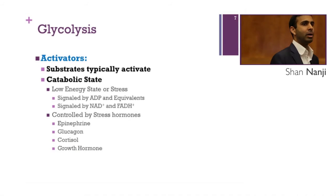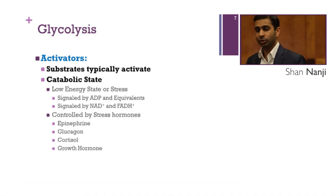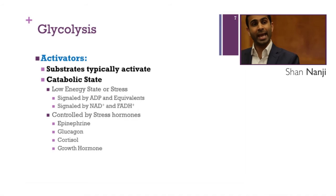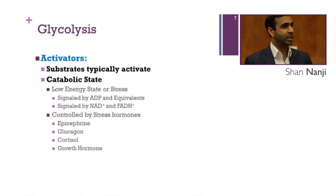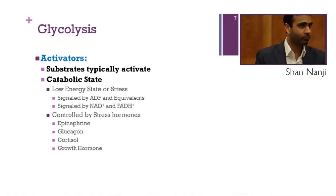When we talk about these metabolic pathways, we want to understand what activates in the catabolic state, what activates in the anabolic state, and what inhibits in each state. An important general rule: substrates typically activate, and products typically inhibit.